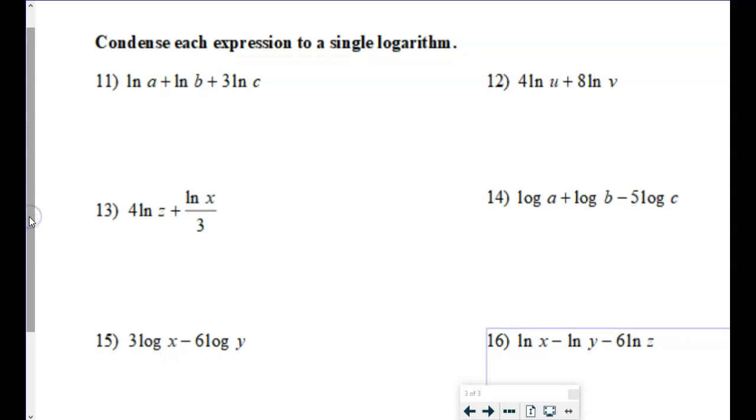Condensing. I like this one better. Condensing is putting it back together into a single logarithm. So for instance, let's take a look at number 14 here. So the first thing I'm looking for are any coefficients that belong back up in the exponent. So for instance, this 5 gets put back up in his exponent.